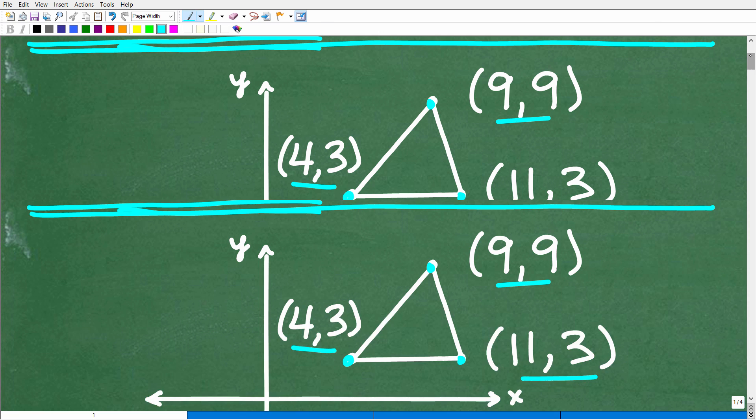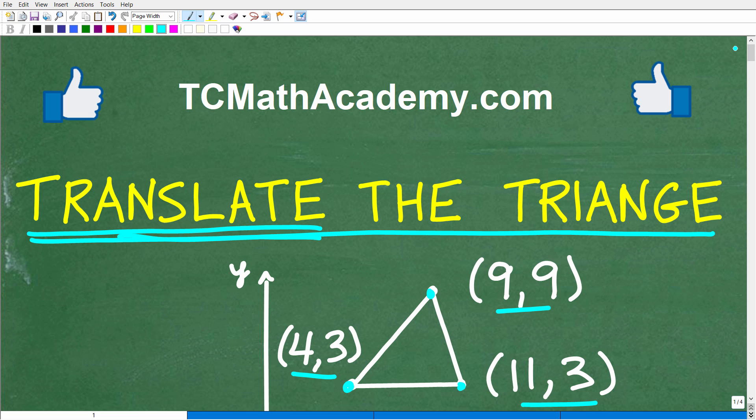That is the question. You can't put your triangle into the comment section, but you certainly could put in the new vertices of the translated triangle. If you have the answer, put that into the comment section. I'll show you the correct answer in just one second. But before we get started, let me quickly introduce myself. My name is John, and I have been teaching middle and high school math for decades. If you need help learning math, check out my math help program at tcmathacademy.com. If this video helps you out, make sure to like and subscribe.